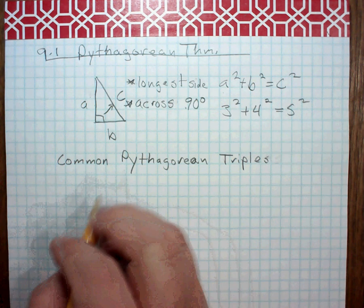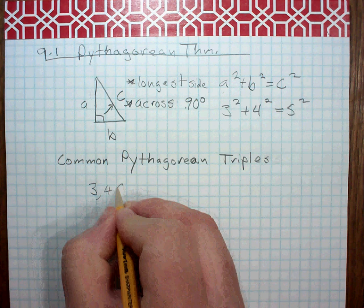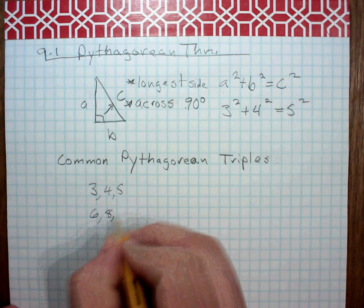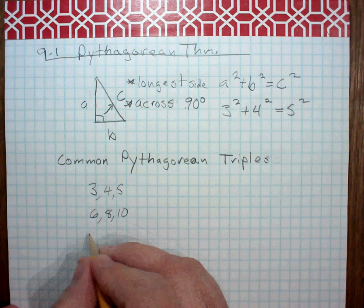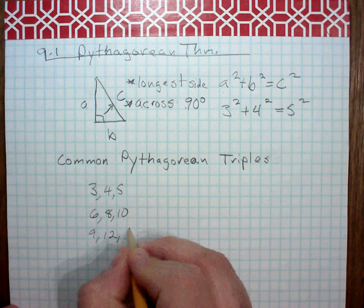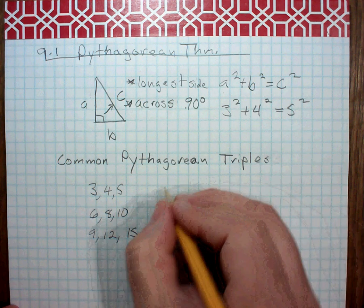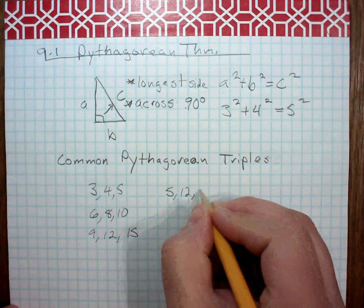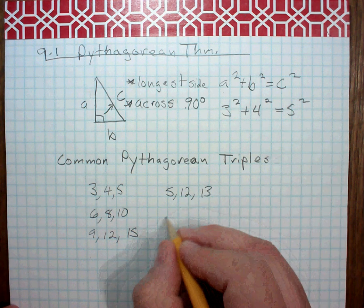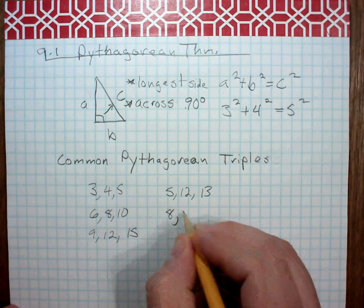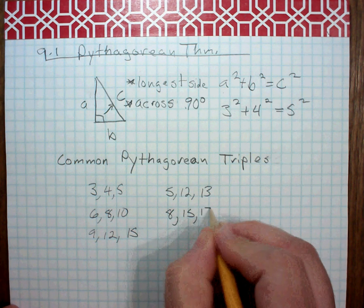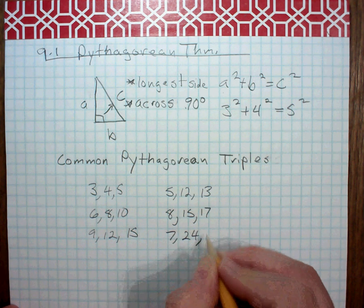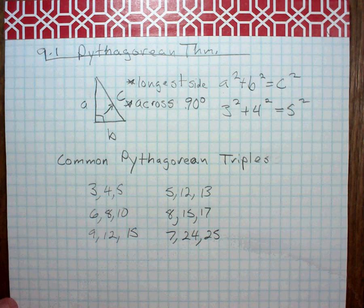So that would be 3, 4, 5 is the most common one, and the other one would be 6, 8, 10, 9, 12, 15. There's 5, 12, 13. There's 8, 15, 17, 7, 24, 25, and there's a whole bunch. There's an endless list of them.